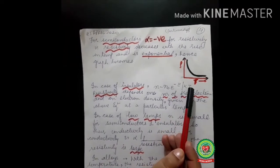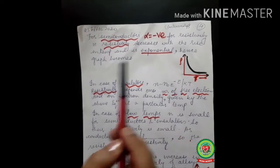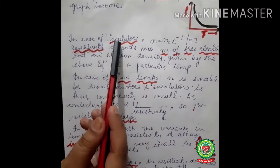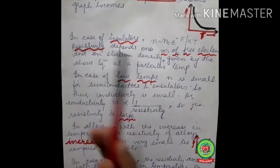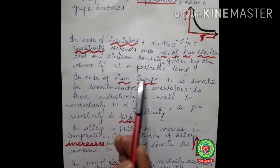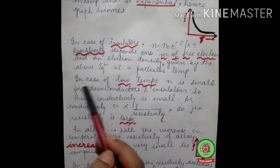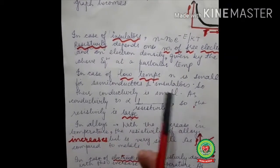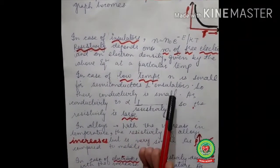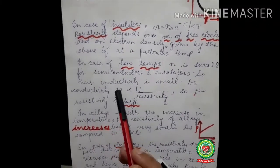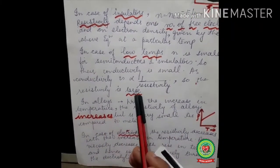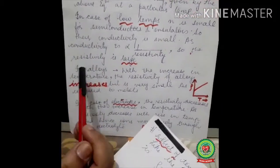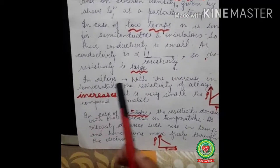For insulators, the number of free electrons is given by n = n-naught times e to the power of (−E/kT), where E is the energy gap. Since the number of free electrons in insulators is very small, conductivity is very low, which means resistivity is very large. At low temperatures, for both semiconductors and insulators, n is small, so conductivity is negligible.